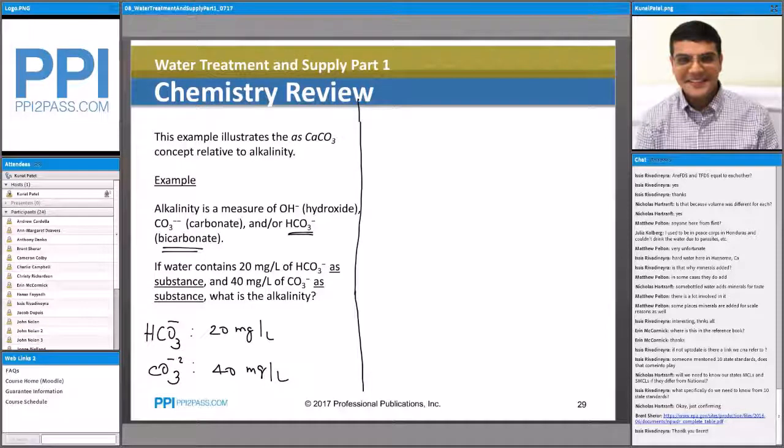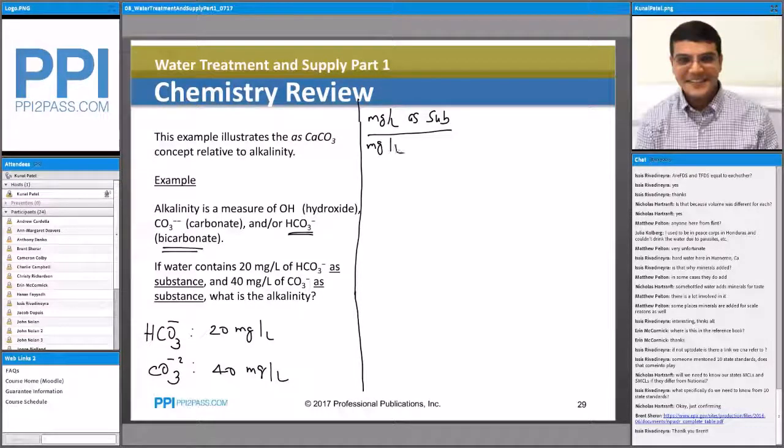What I do is I typically set up the proportion. I know milligram per liter as a substance divided by milligrams per liter as calcium carbonate is equal to equivalent weight of substance over equivalent weight of calcium carbonate, which is 50.